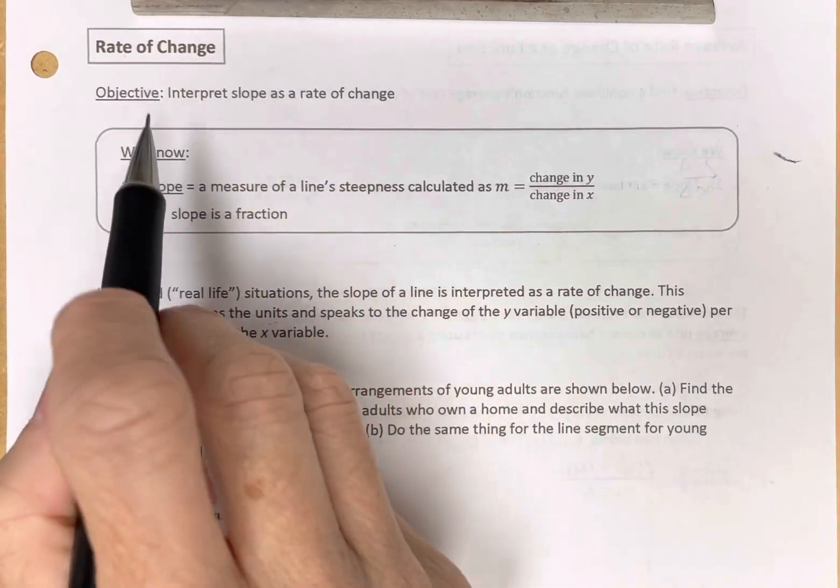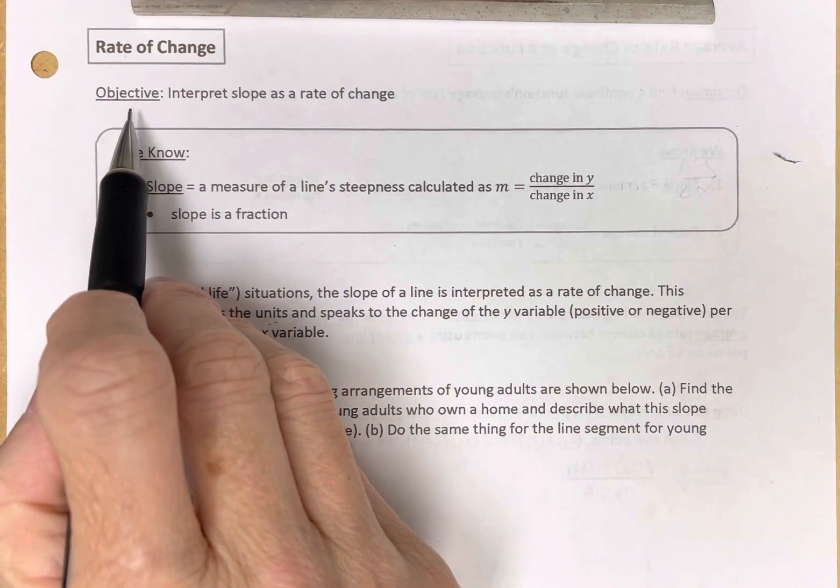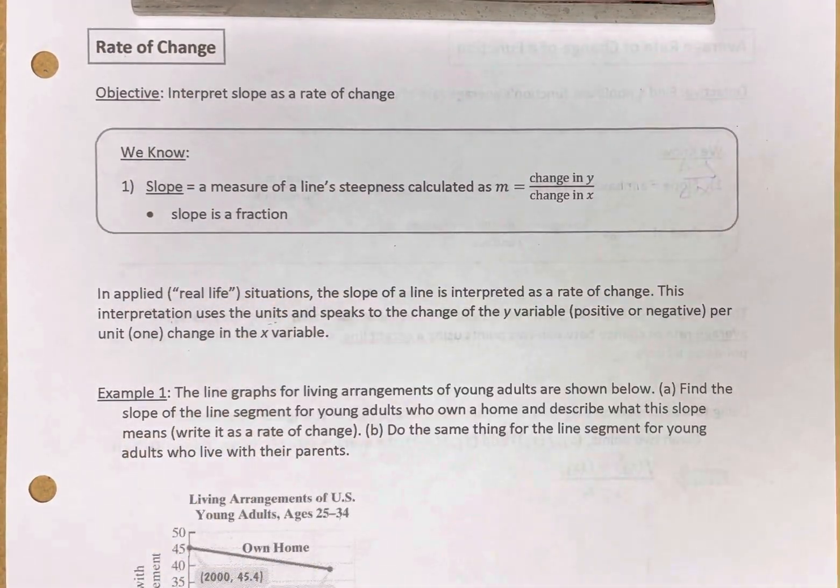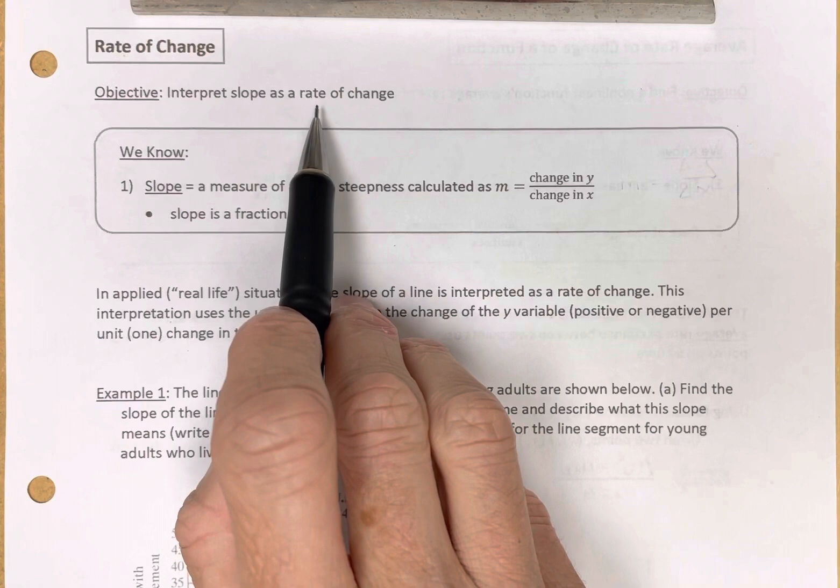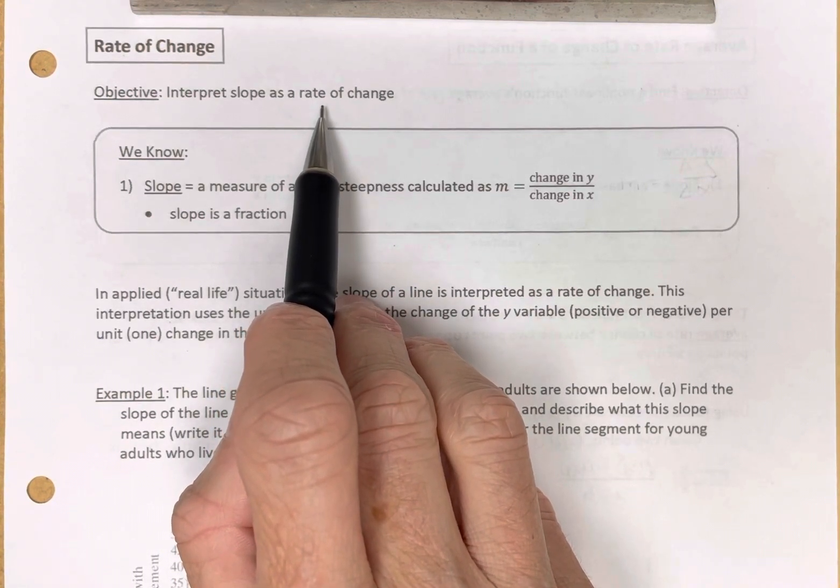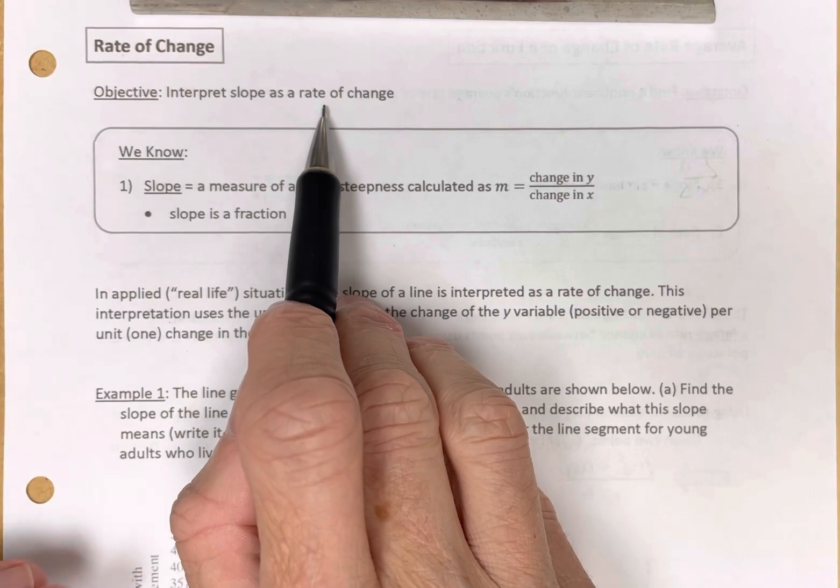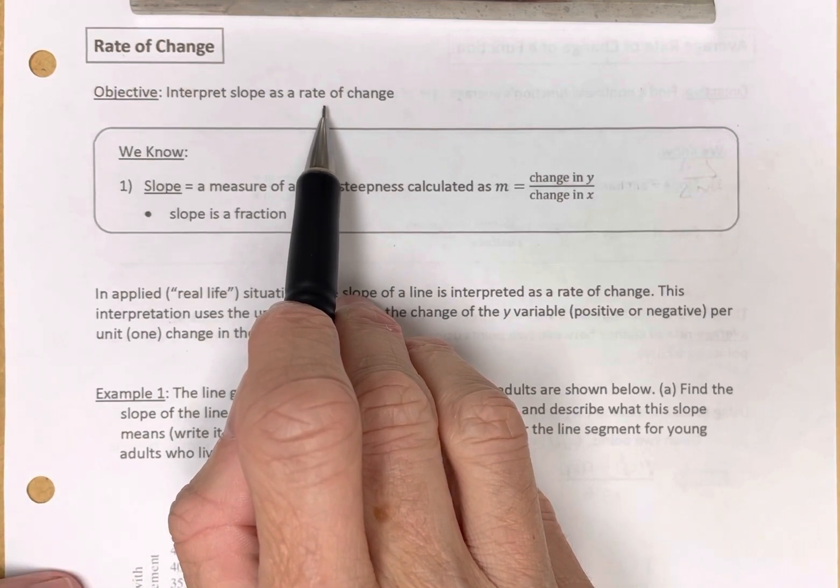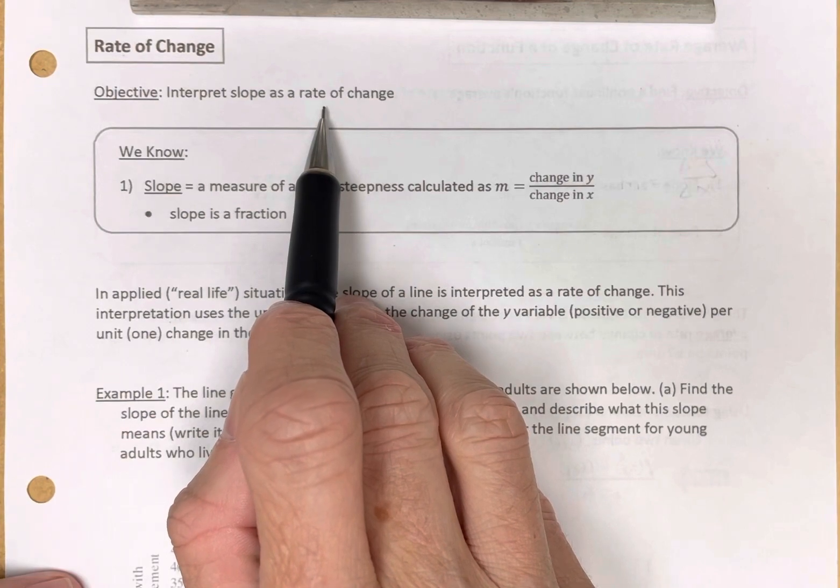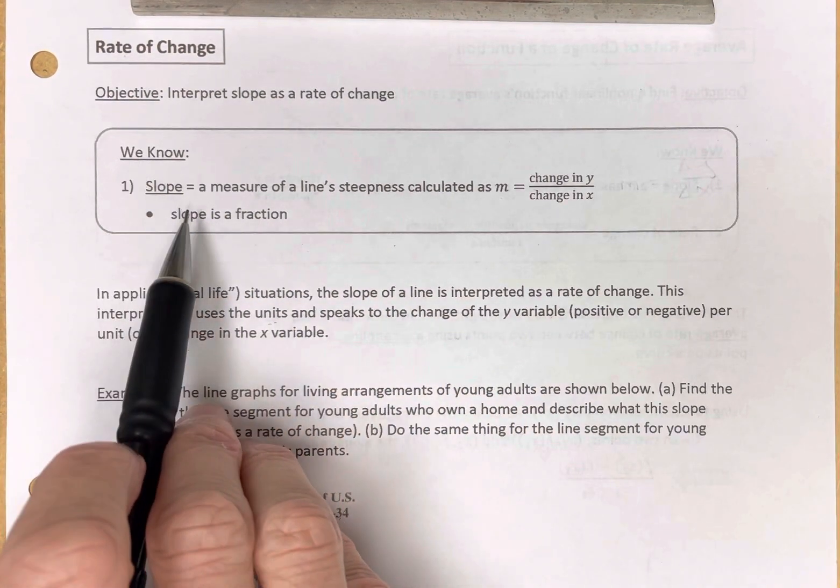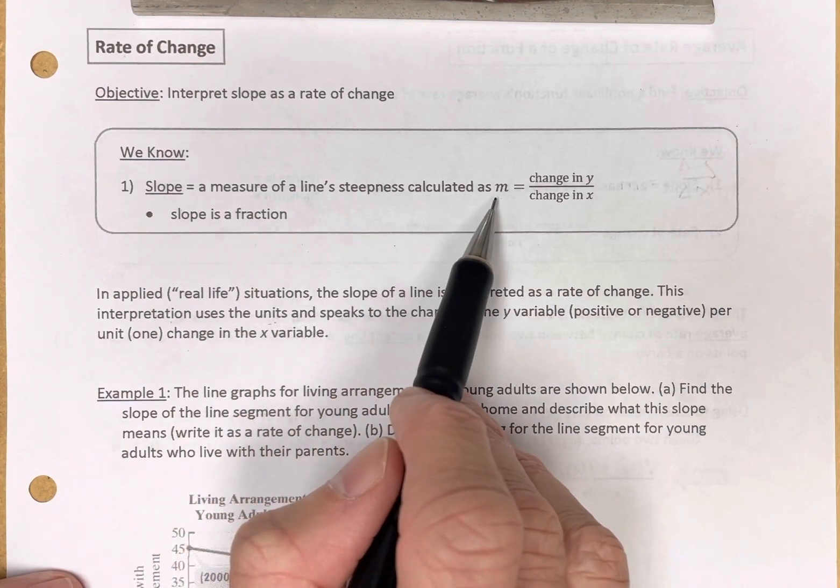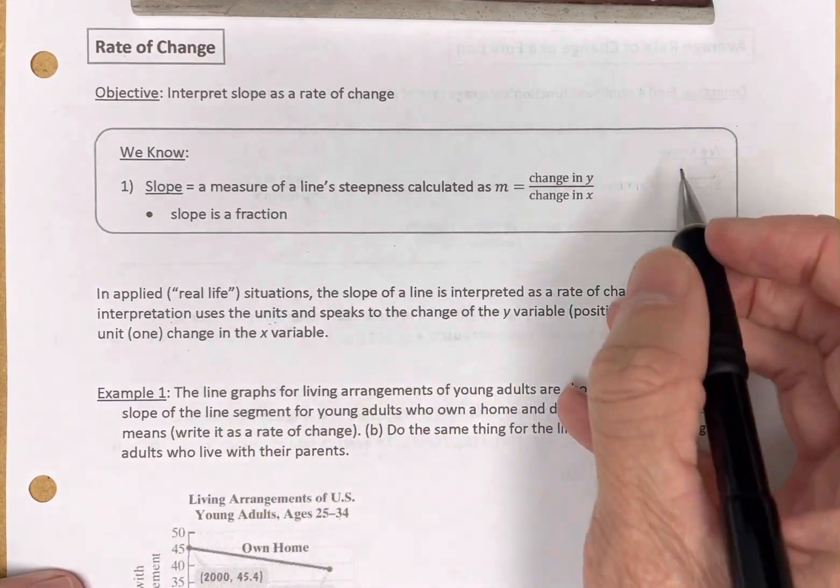Rate of change. So our objective here is we want to interpret slope as a rate of change. In other words, we're going to look at real-life situations and what does the slope mean if you were to describe that slope in a real-life situation? Well, of course, we know what slope is - a measure of a line's steepness.